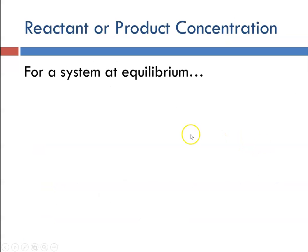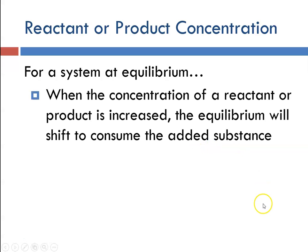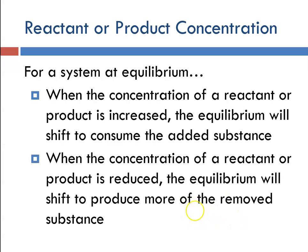For reactant or product concentration, with a system at equilibrium, when the concentration of a reactant or product is increased, the equilibrium will shift to consume whatever is added, shifting either left or right. When the concentration of a reactant or product is removed, the equilibrium will shift to produce more of whatever was removed, again shifting either left or right.